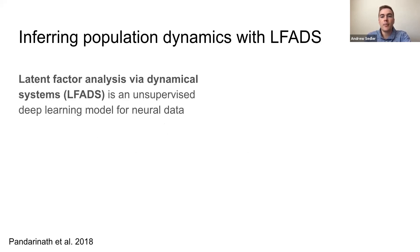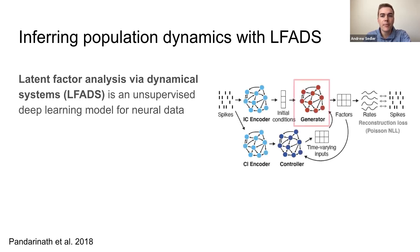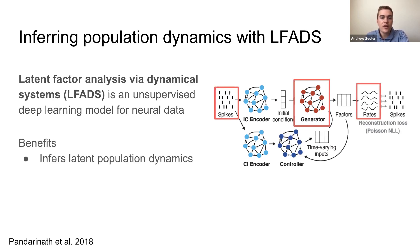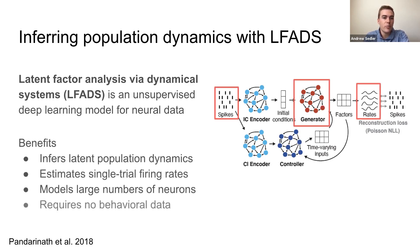Latent factors analysis via dynamical systems, or LFADS for short, is a very effective deep learning model that represents neural activity as the output of a latent dynamical system, which we call the generator. According to the dynamical systems framework, the generator state is determined by its previous state and any time varying inputs. LFADS takes segments of spiking data as inputs and produces estimates of the Poisson rates underlying the observed spikes. It infers latent population dynamics, estimates single trial firing rates, models large numbers of neurons, and requires no behavioral data.